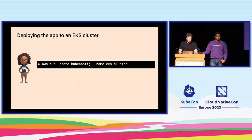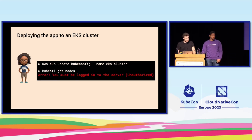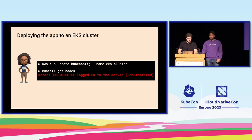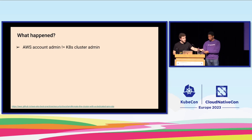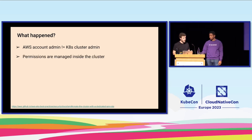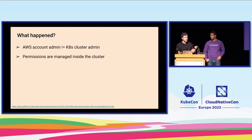She authenticates to AWS, runs the right command to get her kubeconfig, and she's a bit confused because she has access denied — even though she's a full admin to the AWS account. That's the first thing we generally run into: when you're an admin on AWS, you don't necessarily have any permissions on your Kubernetes cluster, because permissions are managed inside the cluster, not through AWS IAM.